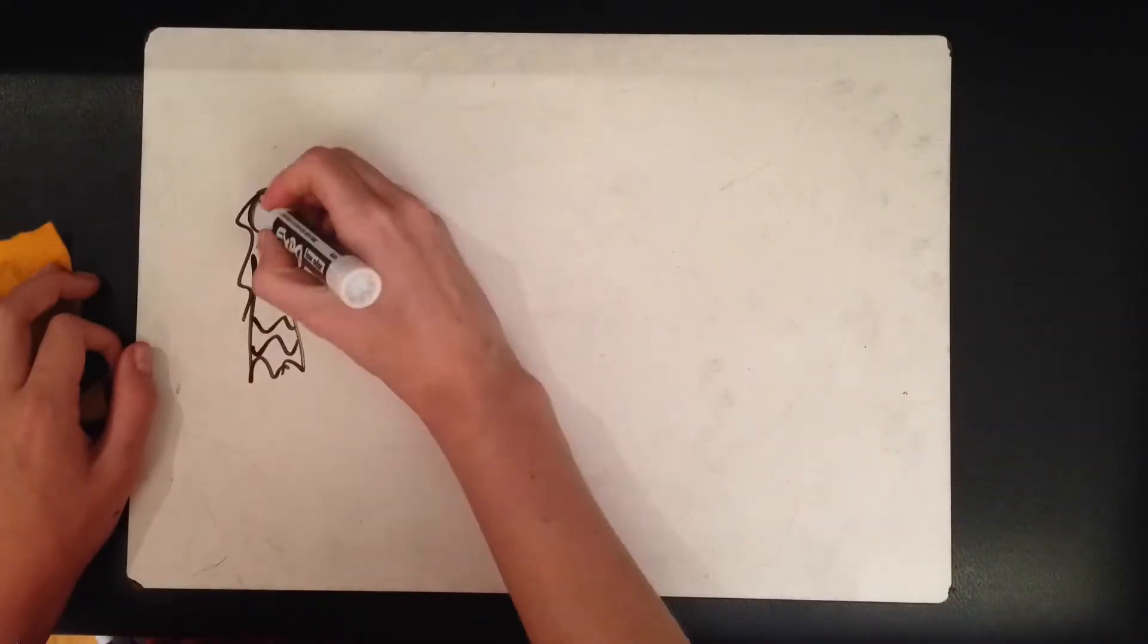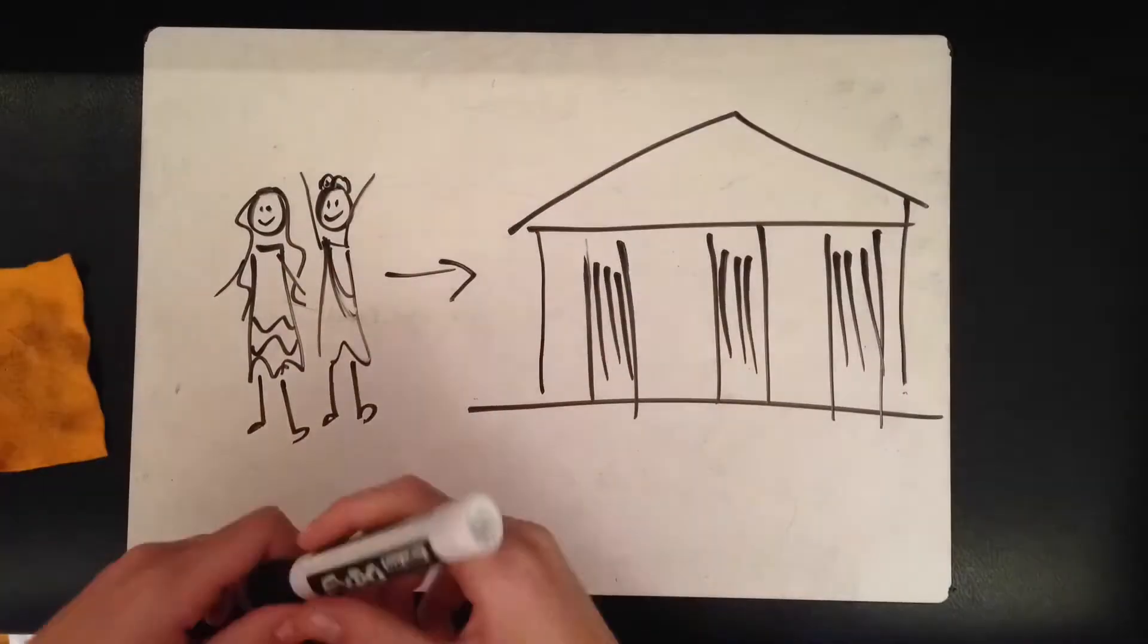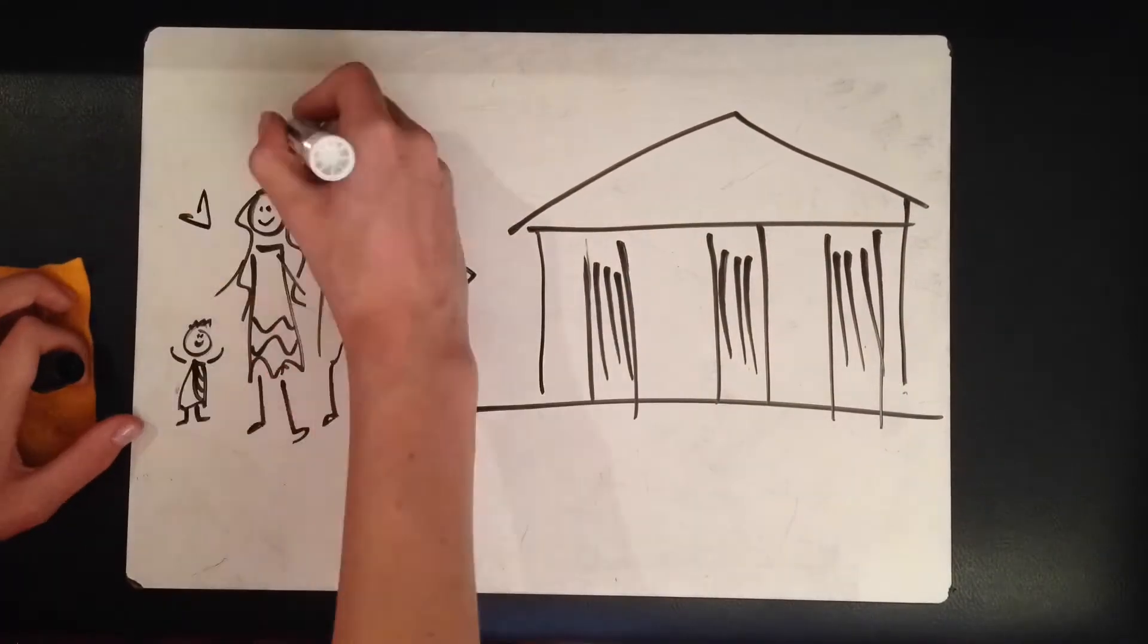The new couple moves into their own house, but remains close to both of their families in Rome. They soon bear a child of their own, a son.